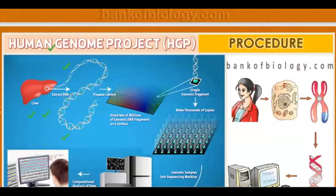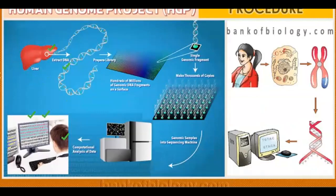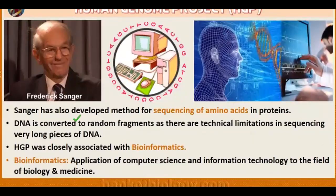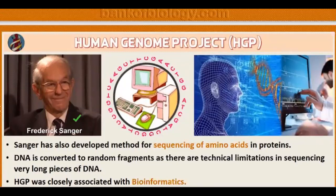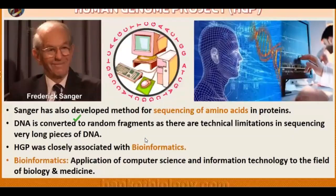We isolate it from the fragments, copy it, sequence it, then put it on various government sites for genetic studies. Frederick Sanger also developed a method for sequencing of amino acids and proteins. DNA is converted to random fragments because there is a technical limitation in sequencing very long pieces of DNA — DNA is very long and in a very coiled form, so we have to break it into fragments so that we can read and understand it.